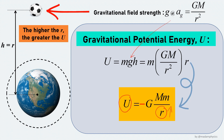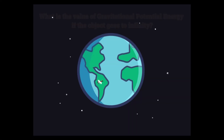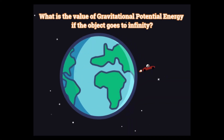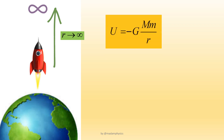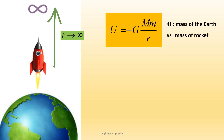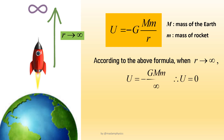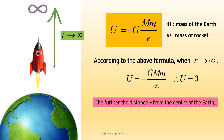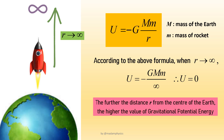As U becomes less negative, its magnitude increases. What if the object goes to infinity? From the formula U equals negative GMm over r, when r goes to infinity, the magnitude of U approaches zero, because 1 over infinity equals zero. The relation now makes sense: the further the distance r from the Earth, the higher the gravitational potential energy becomes, as U goes from a large negative value toward zero as r approaches infinity.